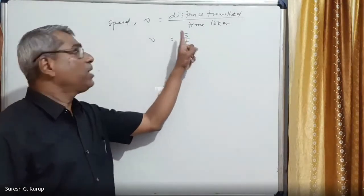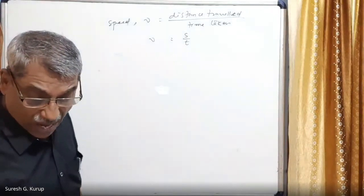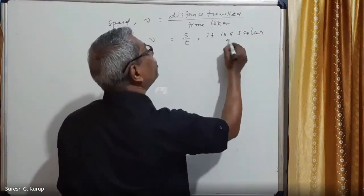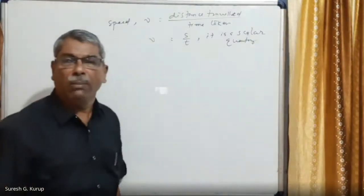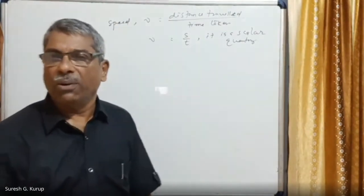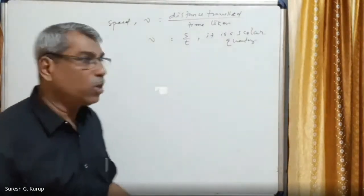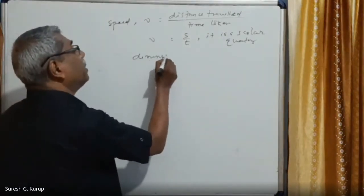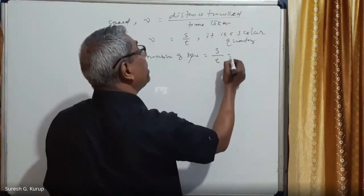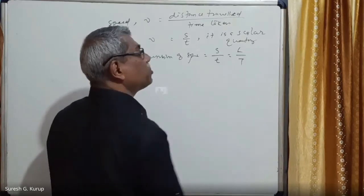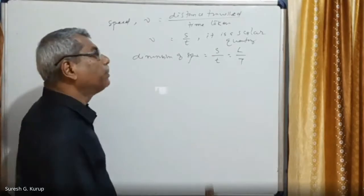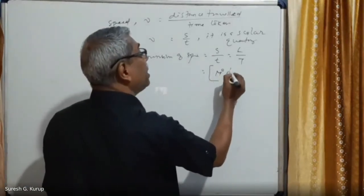If S is written as a vector, that represents displacement. Speed is a scalar quantity — only magnitude is needed for its specification, direction is not necessary. The dimensions of speed are equal to distance divided by time, which gives M⁰L¹T⁻¹.